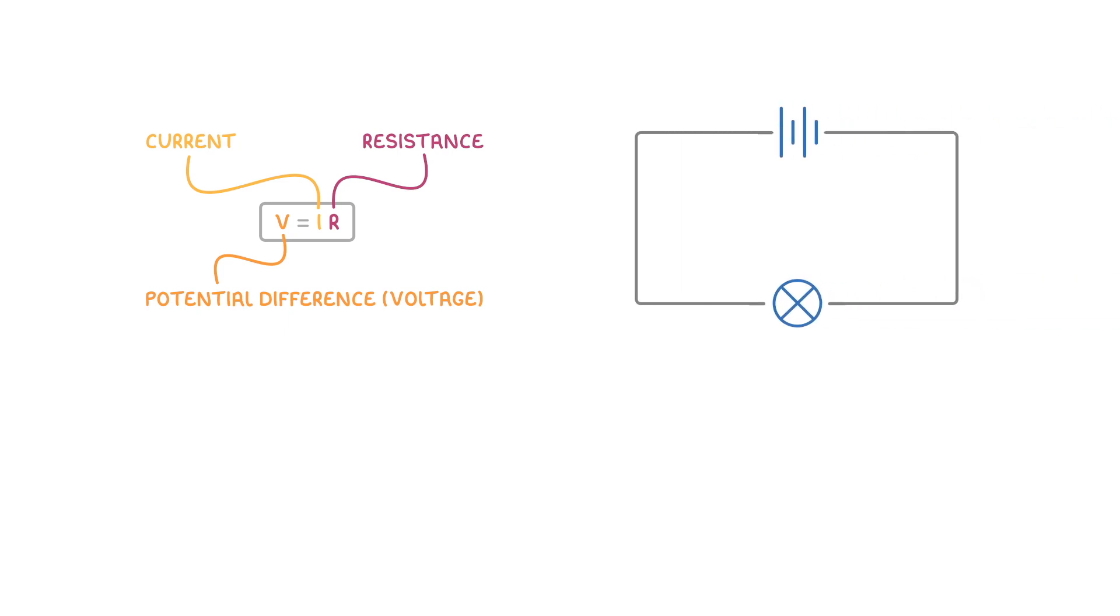So if we had a circuit with a current of 4 amps, and a resistance of 2 ohms, then the voltage of our cell must be 4 times 2, so 8 volts.